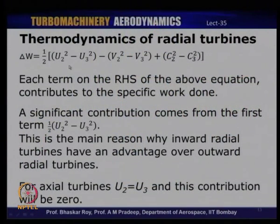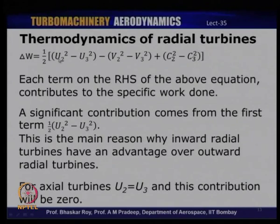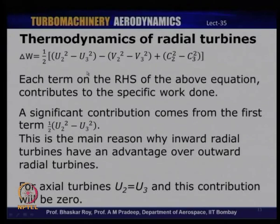For an axial turbine, U2 equals U3, so that component becomes zero and specific work is due to the other two terms. For an inward flow turbine, a significant contribution comes from the change in blade speed (½(U2² − U3²)), which is positive — an advantage over outward radial flow turbines where this term becomes negative. This is why outward flow turbines are no longer used in practice.